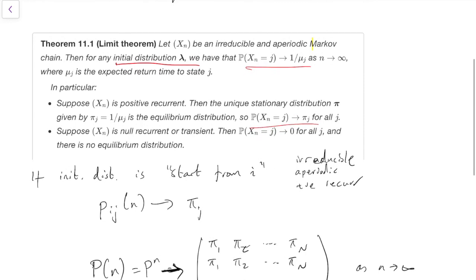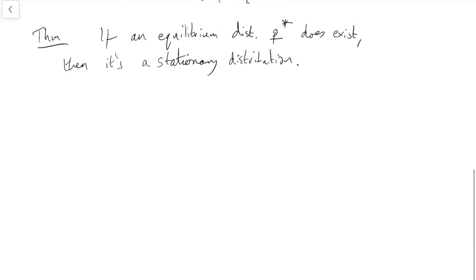However, there's a kind of short version of it we can do, which gets us partway there. Which is that if an equilibrium distribution does exist, then we can say something about it. So if an equilibrium distribution p^star does exist, then it's a stationary distribution. So note that that's kind of partway towards the limit theorem. Because up here in the first bullet point we said that if X_n is positive recurrent, which is the case where the equilibrium distribution exists, then it's equal to the stationary distribution. So this theorem is like a mini version of the limit theorem. So we can at least do that.